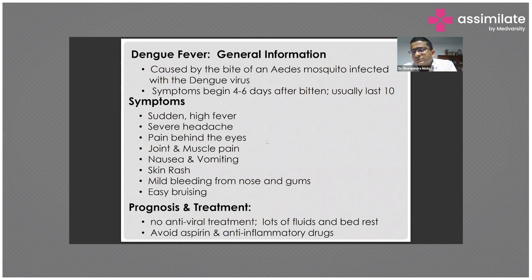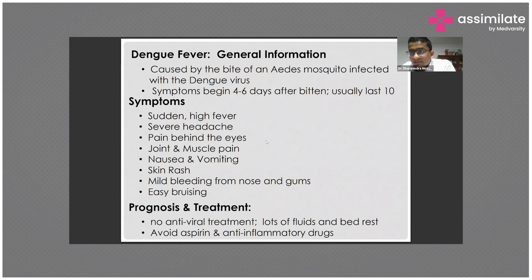In dengue shock syndrome, extensive endothelial inflammation causes loss of intravascular fluid into the extravascular compartment. This fluid loss leads to hypovolemia and systemic hypoperfusion, which results in acute kidney injury and ischemic hepatitis.